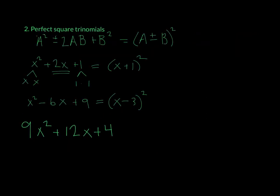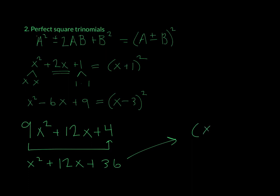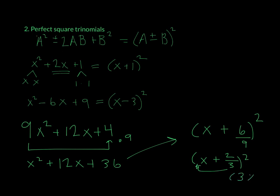Let's say I have 9x squared plus 4. I would prefer to take this 9, multiply the 4, and look at the factoring of 9x squared plus 12x plus 36. That is a perfect square trinomial that factors into x plus 6, squared. But since you multiplied by 9, you need to divide by 9 — so that would be x plus 2 thirds, and bringing the 3 up gives us 3x plus 2, squared.